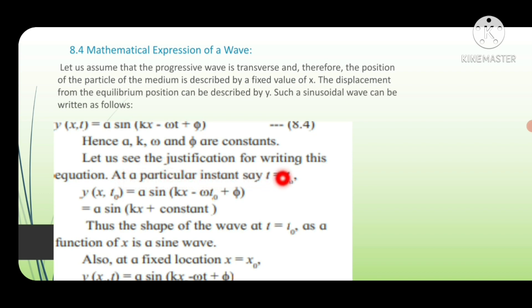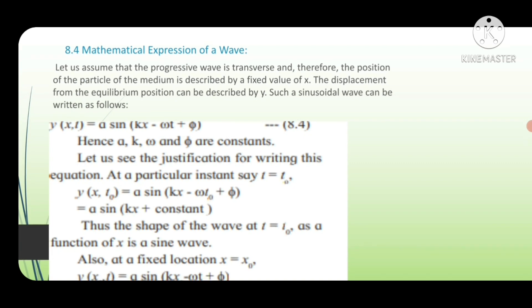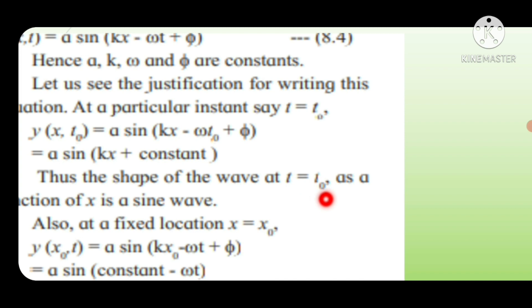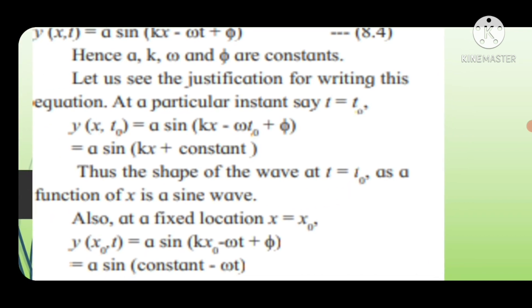Let us see the justification for writing this equation. At a particular instant, say t = t₀, y(x,t₀) = a sin(kx - ωt₀ + φ) = a sin(kx + constant). Thus, the shape of the wave at t = t₀ as a function of x is a sine wave.